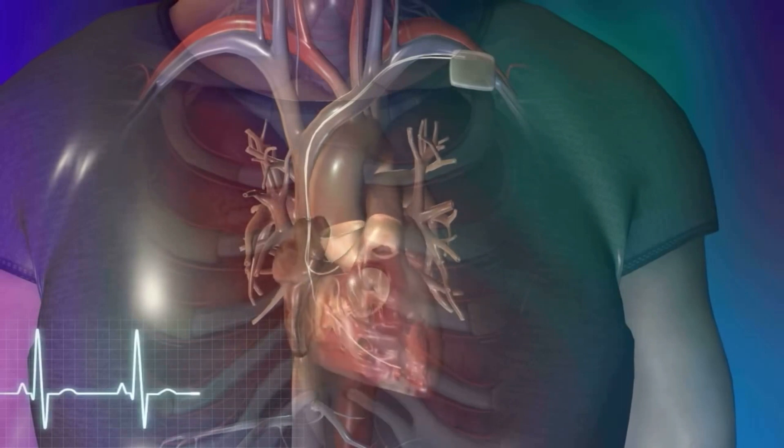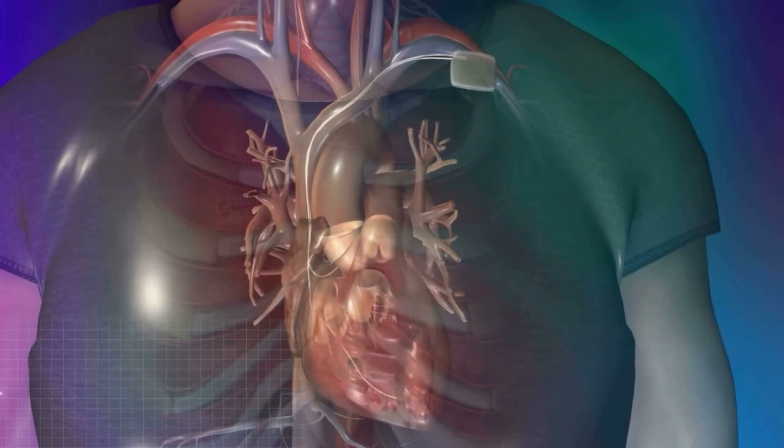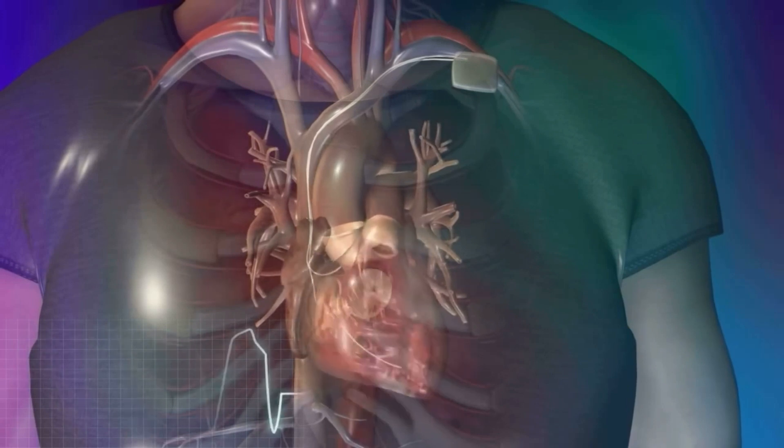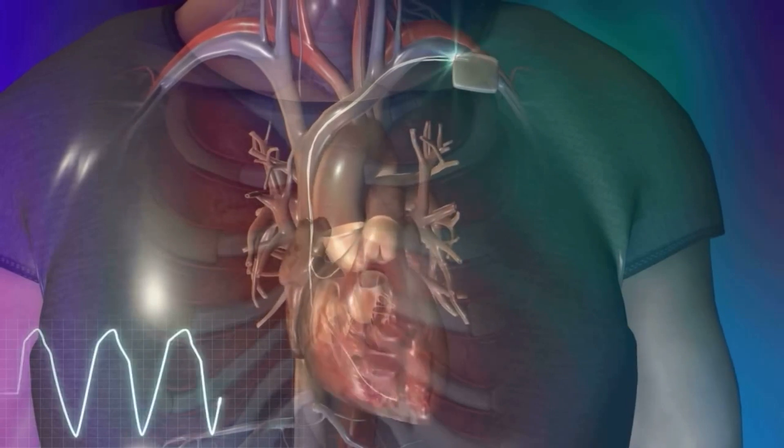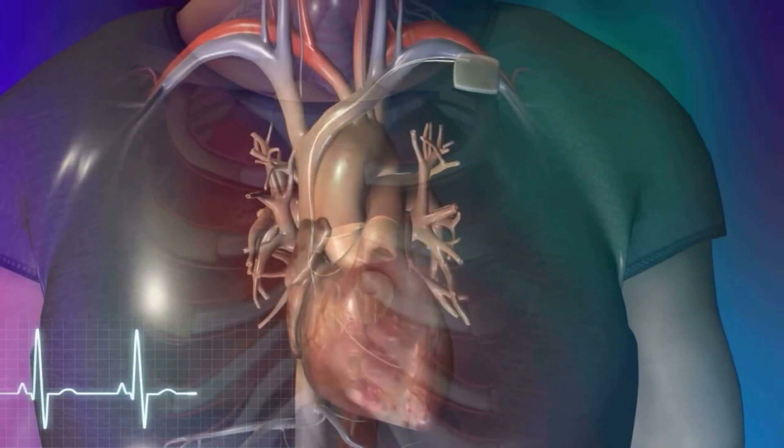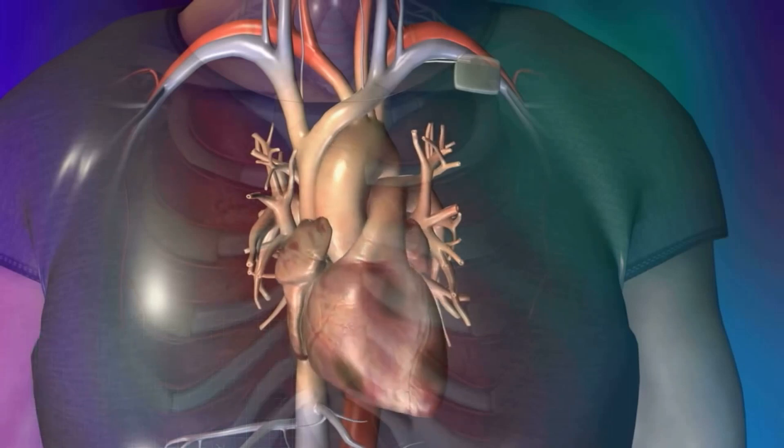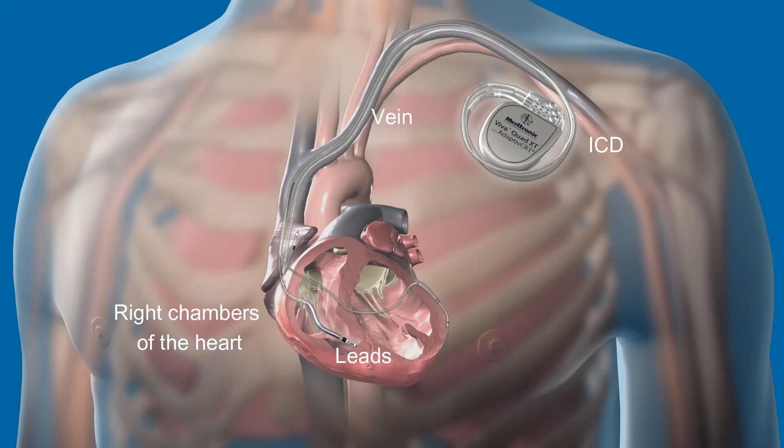ICDs are very similar in construction to the pacemaker. The ICD contains the electronic circuitry inside a titanium can. It is connected to the wires or leads through a plastic connector or header. The leads are passed through a vein to the right chambers of the heart. The lead is usually anchored in the apex of the right ventricle. Just like pacemakers, ICDs can be made to stimulate just the right ventricle with a single lead, the right atrium and right ventricle with two leads, or have three leads to stimulate the right atrium, right ventricle, and another lead present on the walls of the left ventricle.